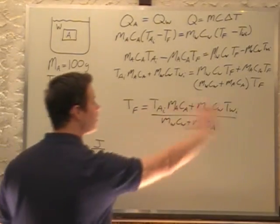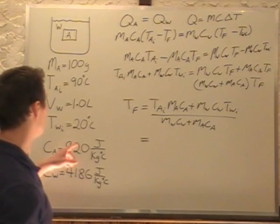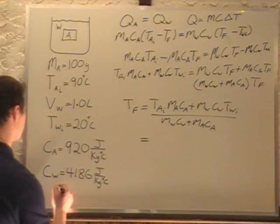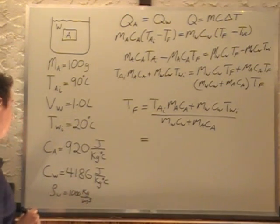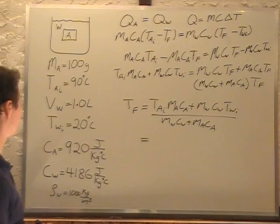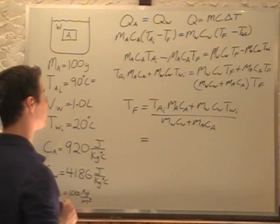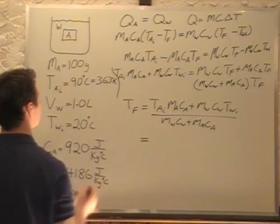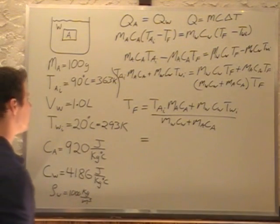That formula gives us our final temperature by plugging in all the knowns. The one thing to sort out is the mass of water. Since density of water equals 1000 kilograms per cubic meter, one liter is interchangeable with one kilogram, so mass of water is 1 kg. We also want temperatures in Kelvin: 273 plus 90 is 363 K for the aluminum, and 273 plus 20 is 293 K for the water.